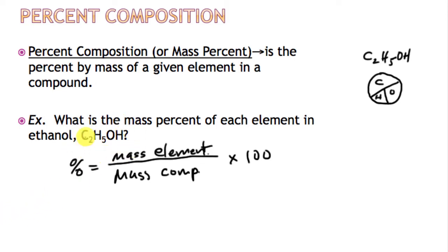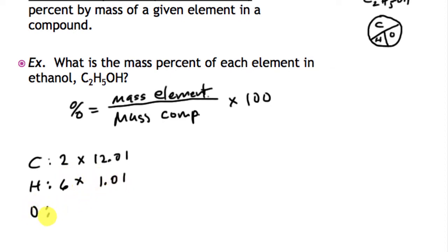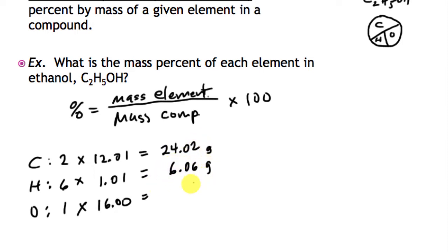Before we calculate percent composition, we need the molar mass of the compound. Since there are two carbons, we multiply by 12.01. For hydrogens — there are six of them — each one is 1.01. And for oxygen, we have one at 16. Adding these up: 24.02 plus 6.06 plus 16 gives us 46.08 grams per mole as the molar mass of C2H5OH.